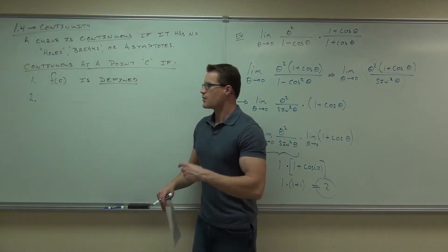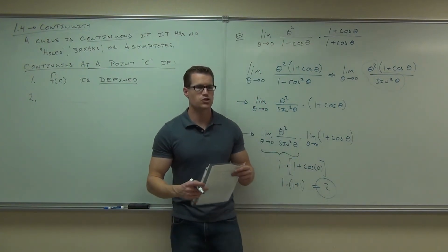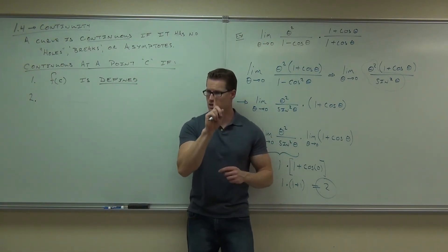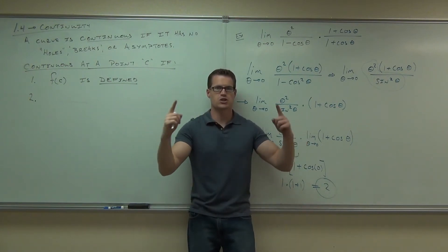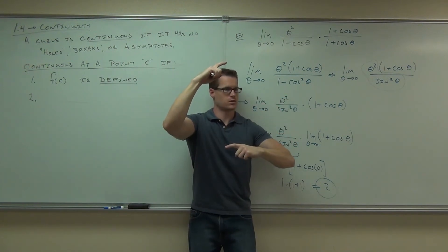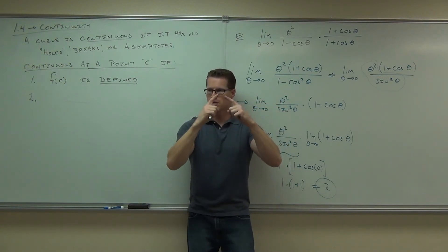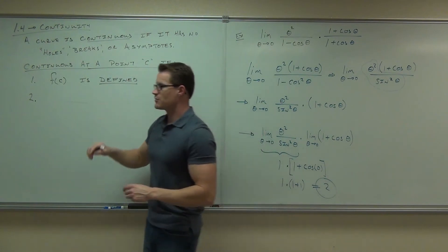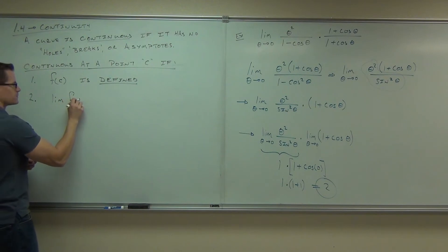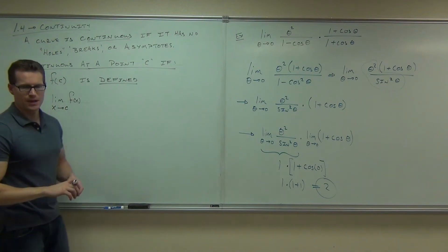Number two: the limit has to exist at that point. That means the function, from both sides around point C — where point C is like your input — is going to the same spot no matter what. That wouldn't be continuous if you have a jump. So the limit has to exist around point C. Not only does C have to be defined, but the limit of f of x as x approaches C must exist.